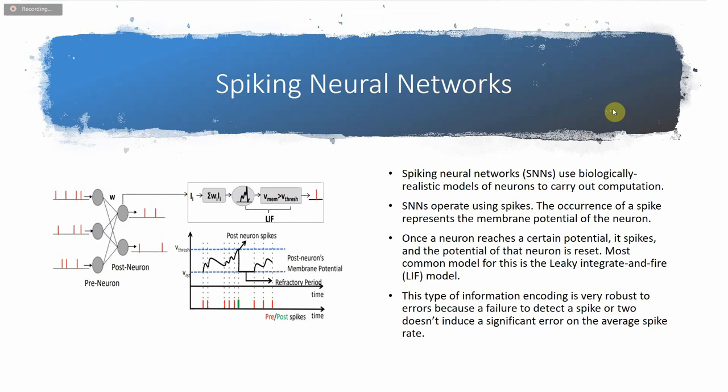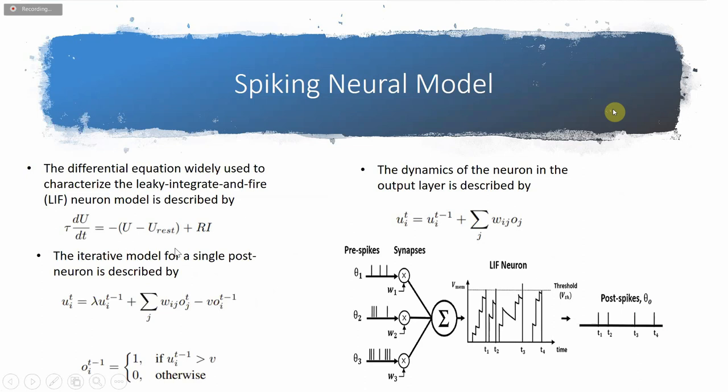The equations shown here represent the spiking neuron model. The pre-spikes obtained from the previous layer are integrated as the current influx in the membrane potential, which decays exponentially. The membrane potential integrates the incoming spikes through the weights and leaks with time constant tau whenever it does not receive a spike. When the membrane potential crosses the firing threshold, the neuron generates an output spike and the membrane potential is reduced to the reset potential.